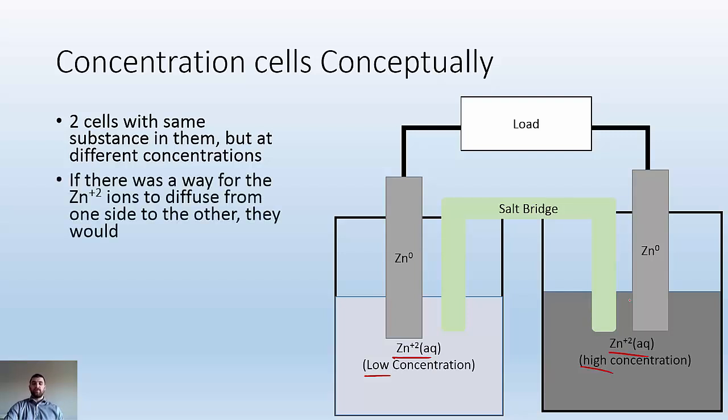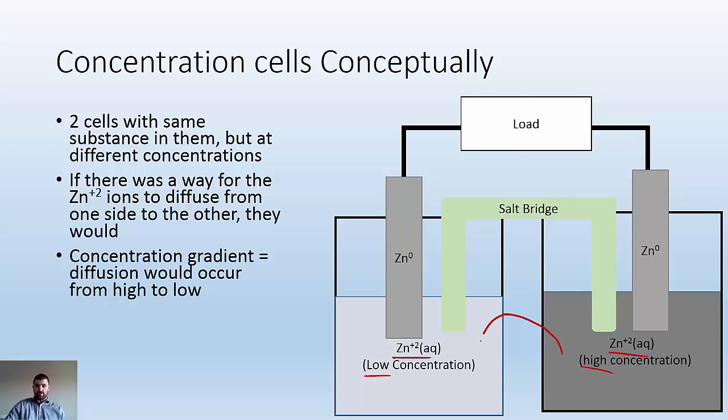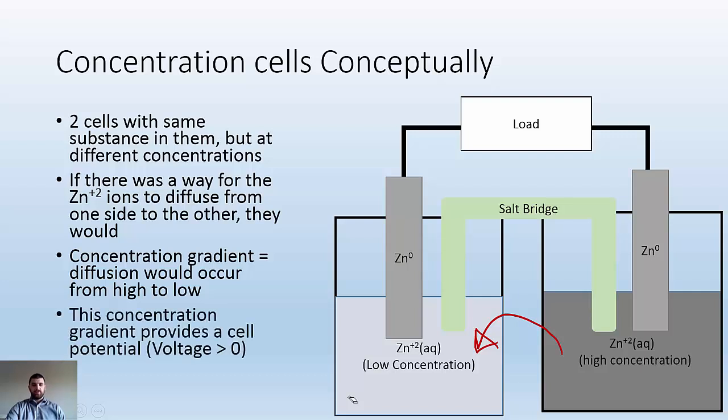If there was a way for the zinc ions to diffuse from one side to the other, they would, because things like to diffuse from high to low concentrations. There's this concentration gradient. It's that motivation that is going to give us our cell potential. The voltage is going to be greater than zero because those ions want to go from high to low, but they can't directly.